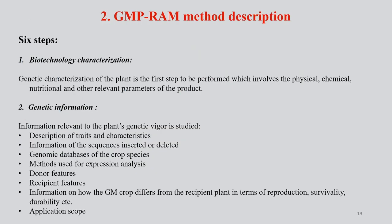Continuing with the GMP-RAM method description, there are six steps involved. The first is biotechnology characterization. Genetic characterization of the plant is the first step to be performed, which involves the physical, chemical, nutritional, and reliability parameters of a product.